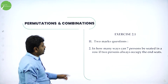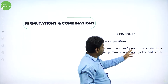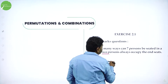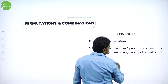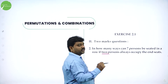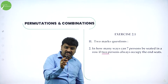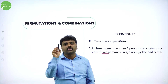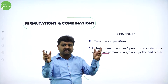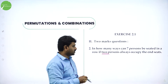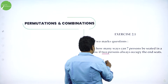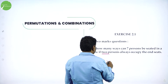Next: in how many ways can 7 persons be seated if 2 persons always occupy the ends? 7 persons can be arranged in 7 factorial ways, but 2 places are fixed, so we have only 5 places. In 5 places we can arrange them in 5 factorial ways.